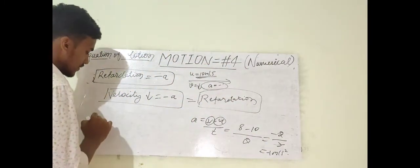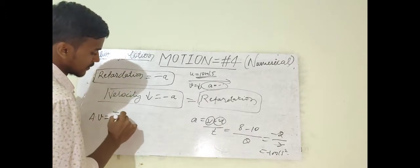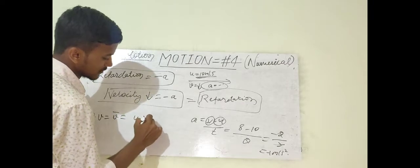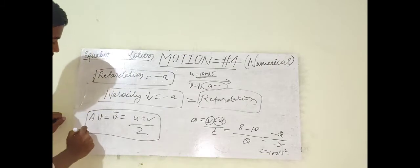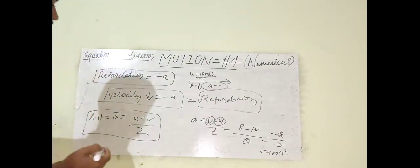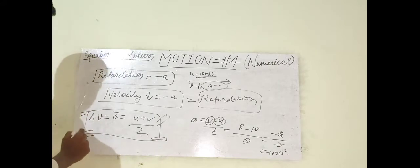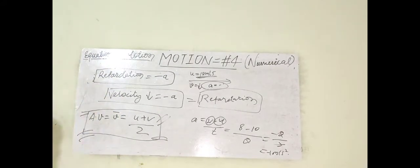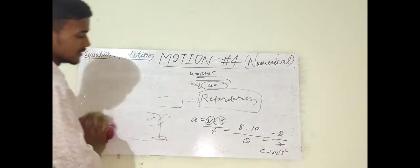The last term from the previous lecture was average velocity, denoted as V-bar. Its formula is (U + V) / 2. We will use this formula to solve the second equation of motion. This is a very important formula. We covered all of this in the previous lecture.